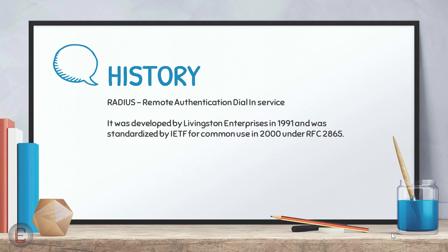Let's look at the history of this protocol. It was developed by Livingston Enterprises in 1991 and was standardized by IETF — the Internet Engineering Task Force — for common use. RADIUS was submitted as a draft to IETF in 1994. In 1995, a group in IETF was assigned to this draft to further polish it. The first RFC, which stands for Request for Comments, was drafted in 1997. The final RFC for RADIUS was 2865, which was issued in the year 2000. Many other extensions were added later, which made this a very popular choice.